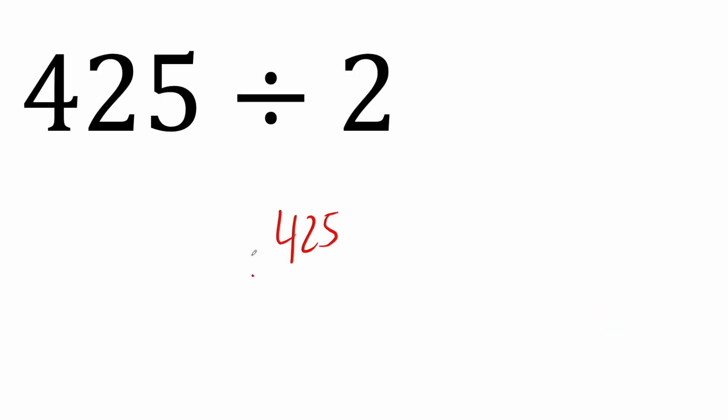So we have 425 divided by 2. We think to ourselves, how many times can 2 go into 4? 2 times. 2 times 2 is 4. Now 4 minus 4, we get 0, so we bring down the 2.